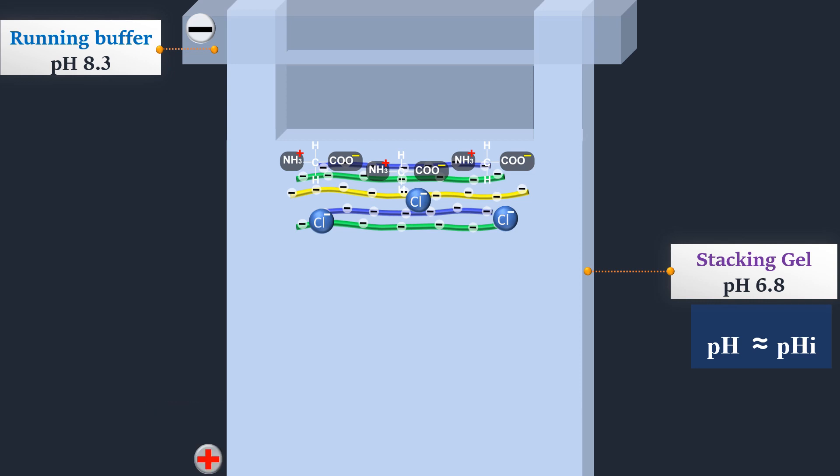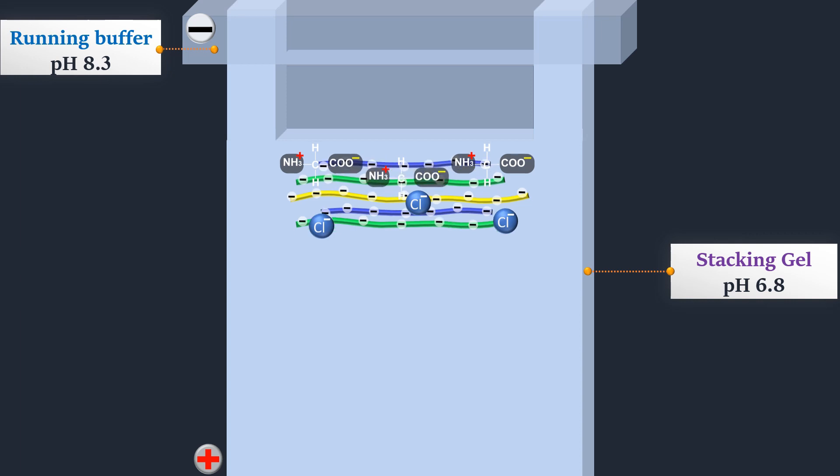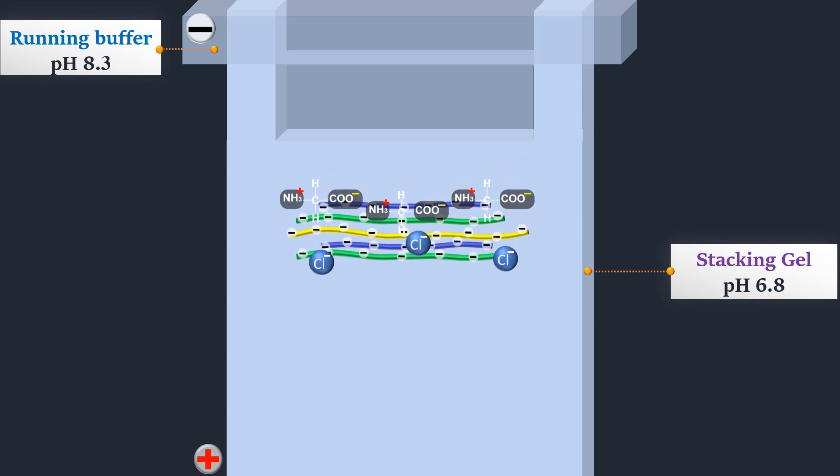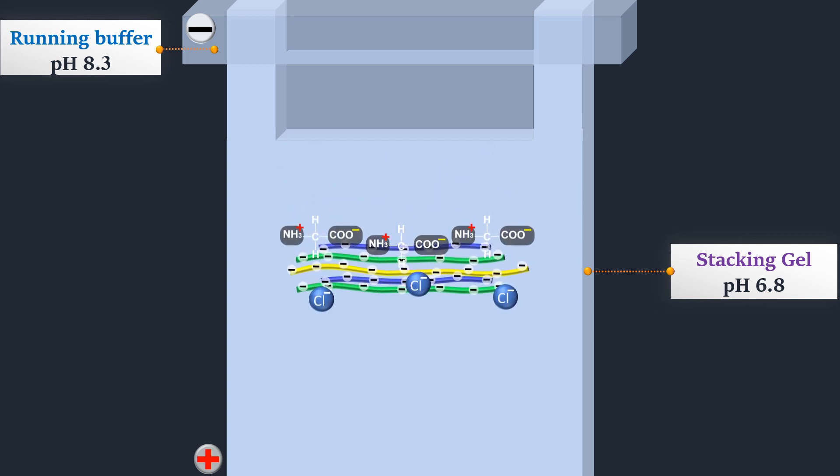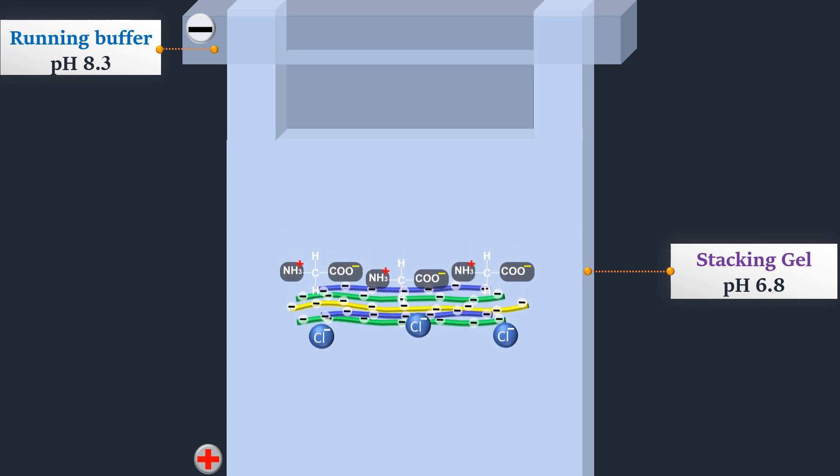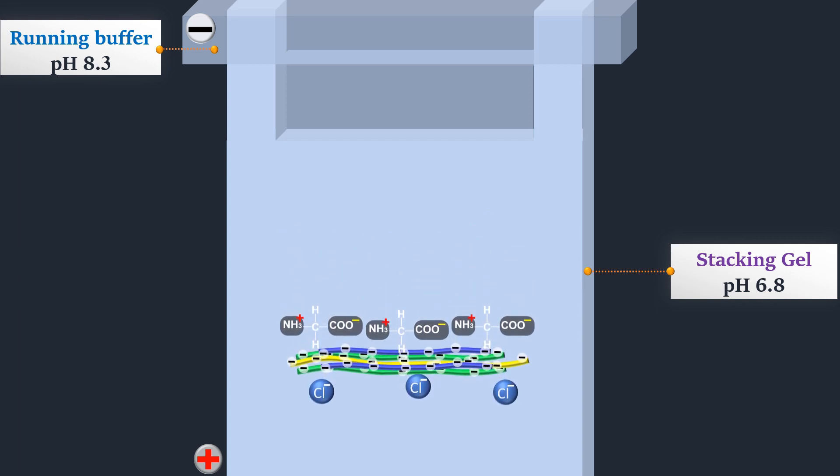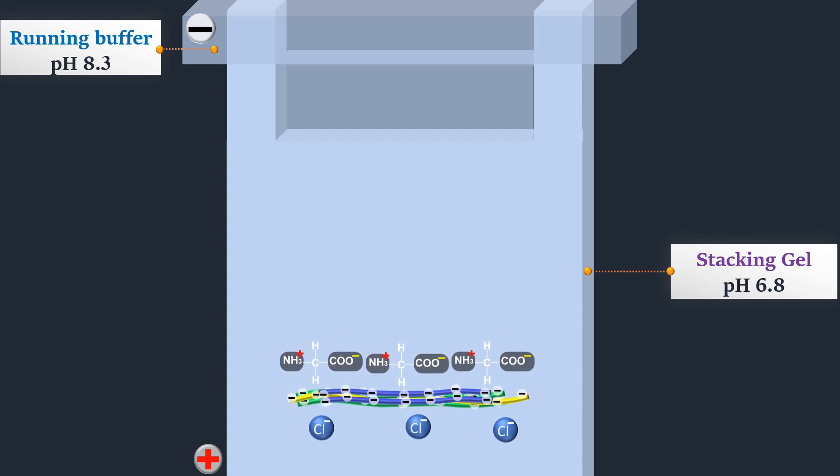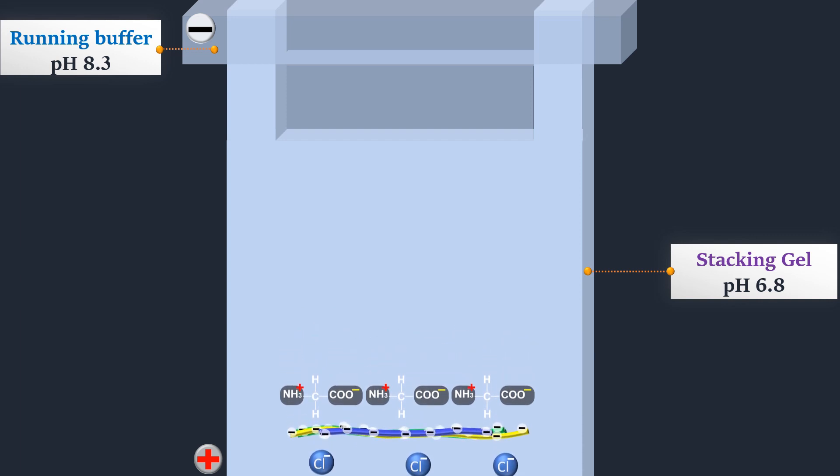The chloride ions, on the other hand, move much more quickly. Chloride ions migrate in front of the proteins as leading ions, and glycine molecules migrate behind the proteins as initial trailing ions. Consequently, proteins are trapped and concentrated into a narrow zone between the chloride ions and glycine.